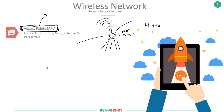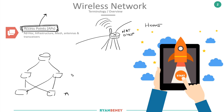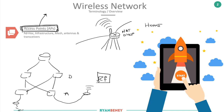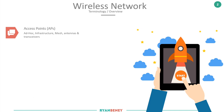In an enterprise environment — where we have the edge router, distribution switches, and access switches — we have access points as dedicated devices that hang off the access layer. They extend access into our network through radio frequencies. These devices are surveyed in your building to find the best location, then installed and connected back into the access switch through ethernet cables, creating a central point for devices to connect to.